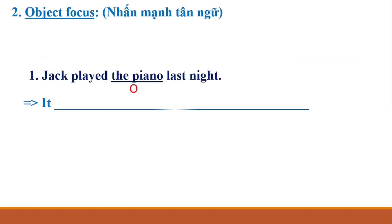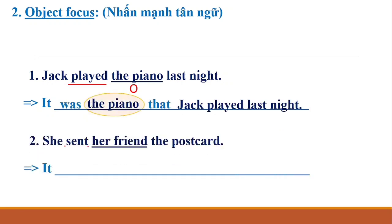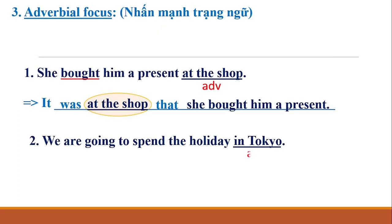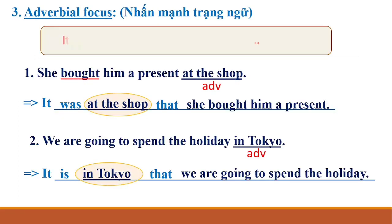For emphasizing the object, the structure is: It is/was + object + that + remaining clause. For emphasizing the adverbial, the structure is: It is/was + adverbial + that + remaining clause.